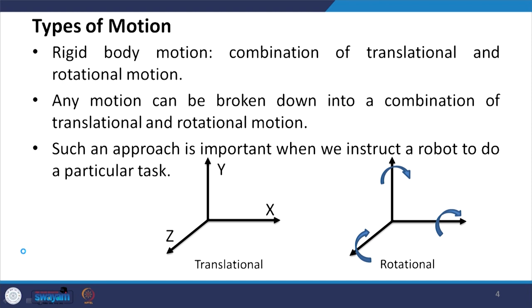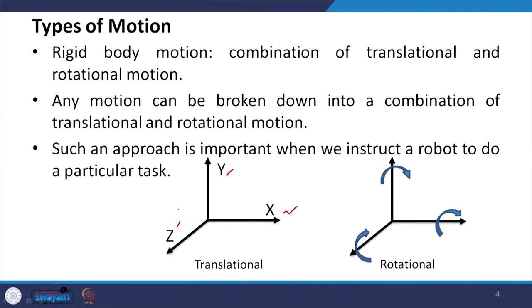Such an approach is important when we instruct a robot to do a particular task, planning the breakdown of motion. Translational motion can be described with the help of x, y, z axes — three translational motions. Similarly, we can have three rotational motions: rotation about the x axis, rotation about the y axis, and rotation about the z axis.